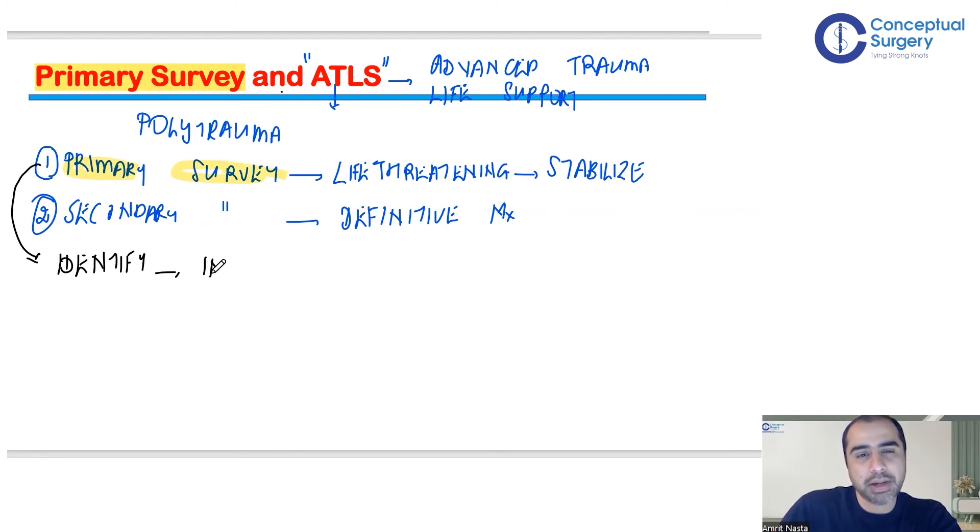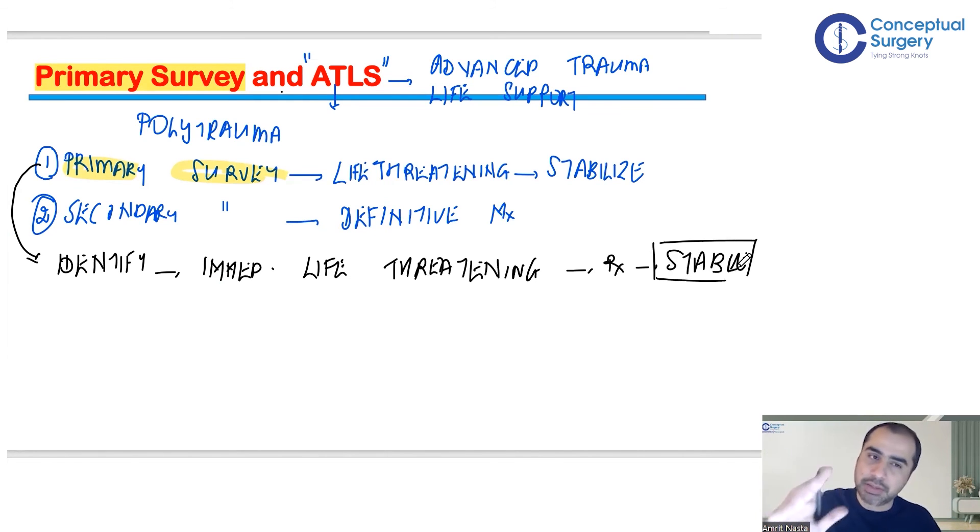Once identified, they will be treated so the person becomes stable. By the end of primary survey, your aim is to make the patient stable so you can proceed to secondary survey.